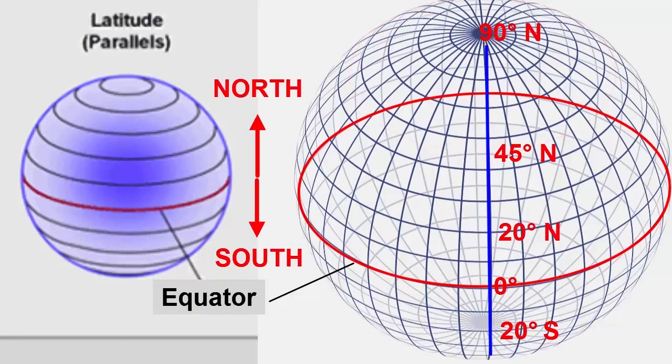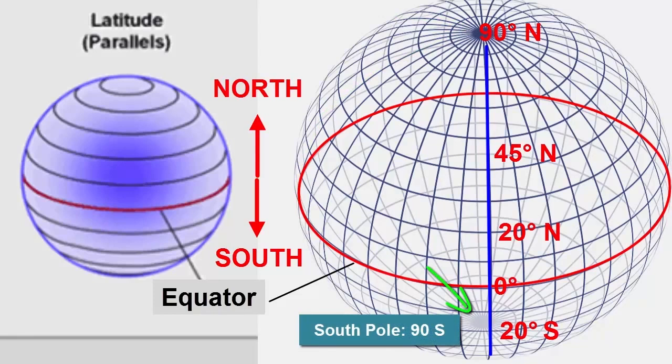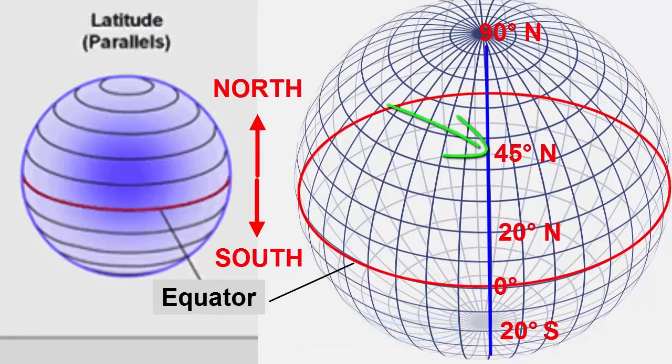For example, if we travel to the North Pole, we have travelled one quarter of a circle away from the equator or 90 degrees north latitude. The south pole is at 90 degrees south latitude. Halfway in between the equator and the poles we travel 45 degrees north or south.